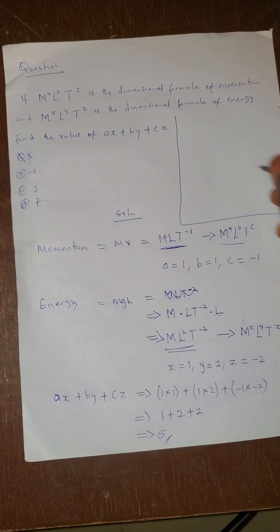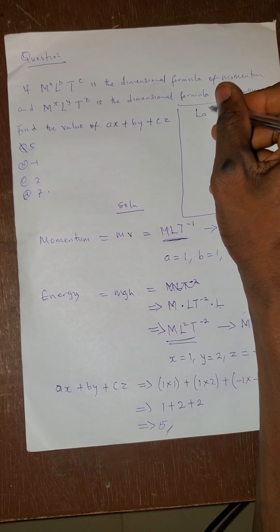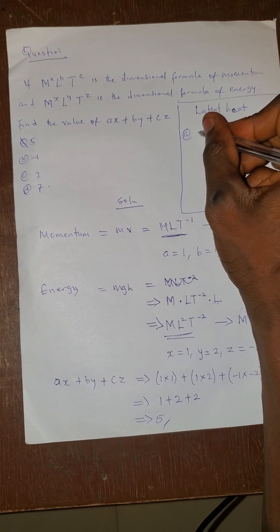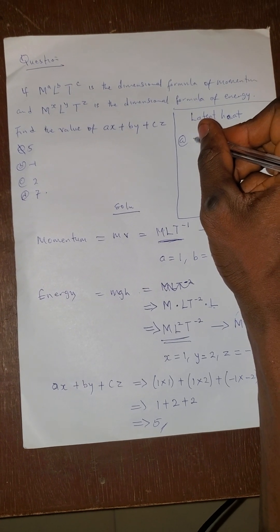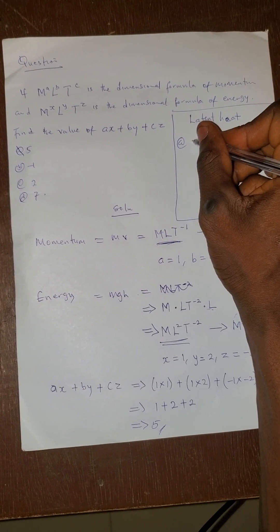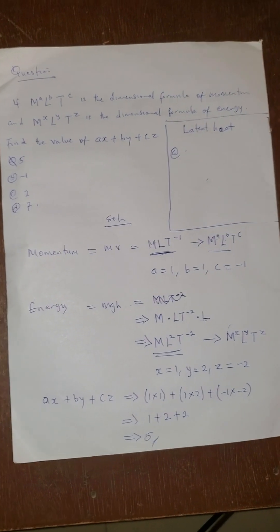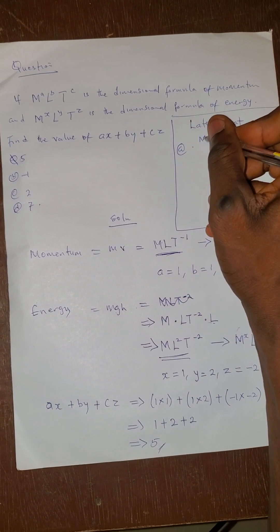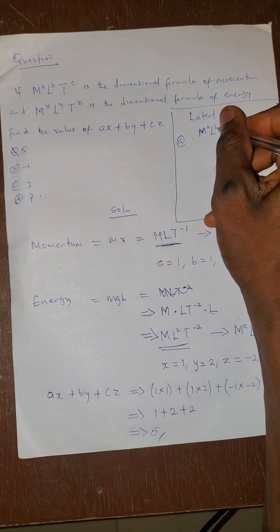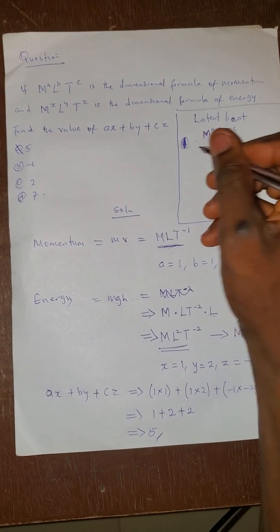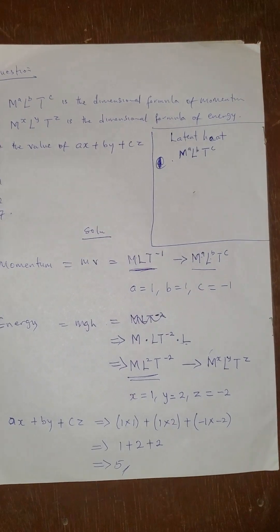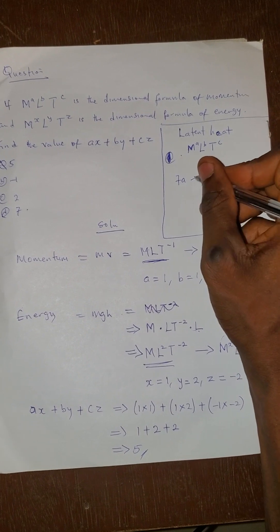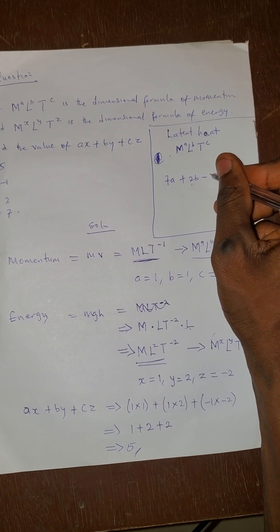The question says, what is the dimension of latent heat? If the dimension of latent heat is M raised to power a, L raised to power b, then T raised to power c, what is 7a plus 2b minus 3c?